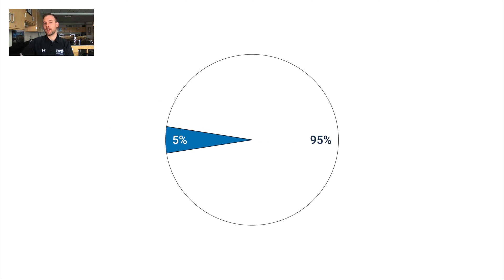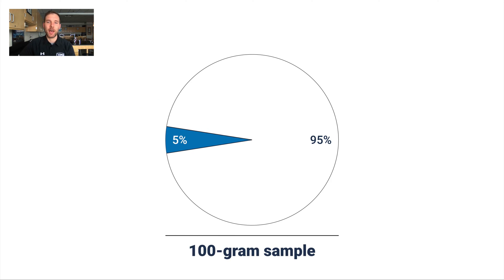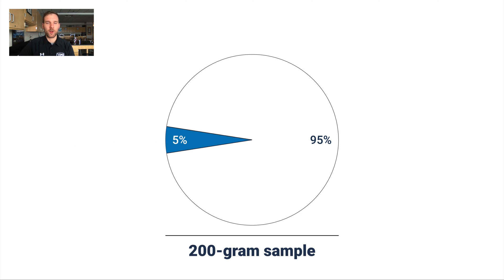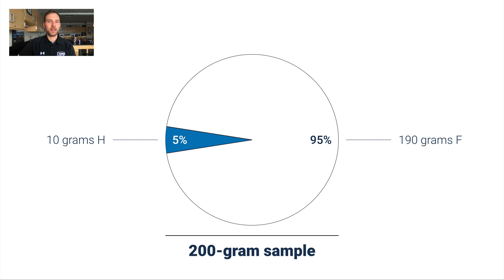That's helpful information. If I have a 100-gram sample of HF, 5 grams of that sample is hydrogen and the other 95 grams will be fluorine. You could scale this proportion up or down — if I had a 200-gram sample of HF, that would mean 10 grams is hydrogen and the remaining 190 grams is fluorine.